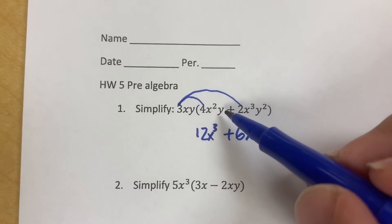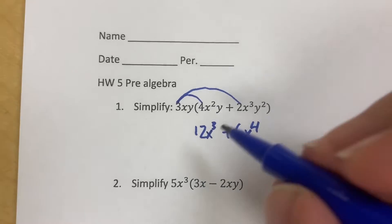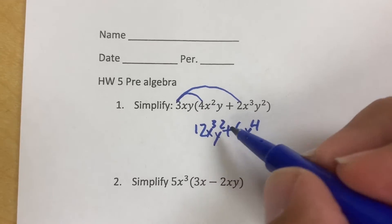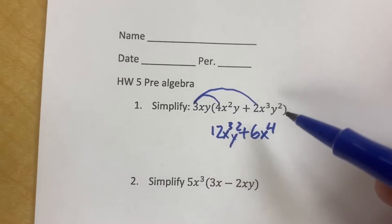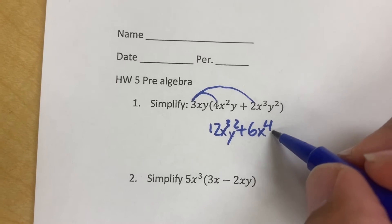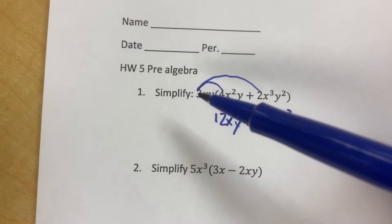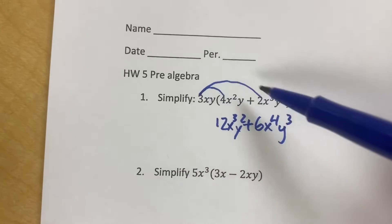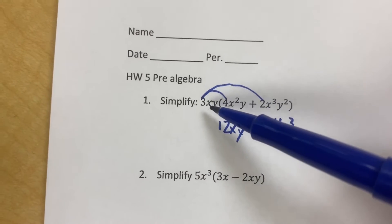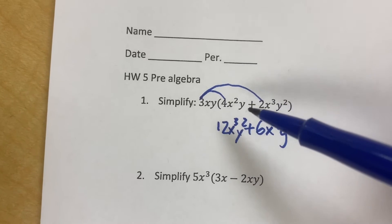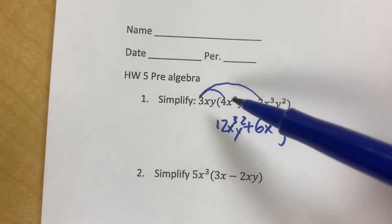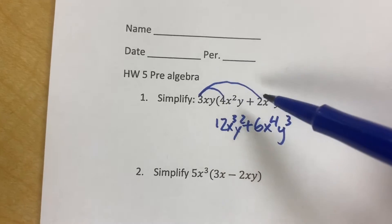Now the y is going to multiply with everything. y times y is y squared. y times y to the second is now going to make y to the third. So like I said, the numbers in the front are going to multiply with the numbers in the front. The x and the y are also multiplying, but the end result is literally it's adding another exponent to each one.